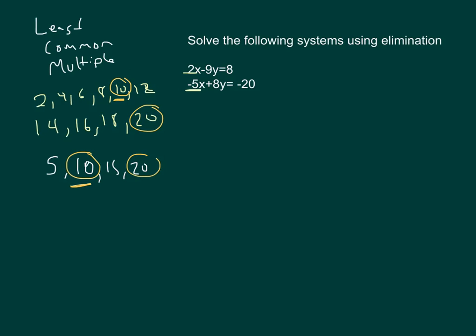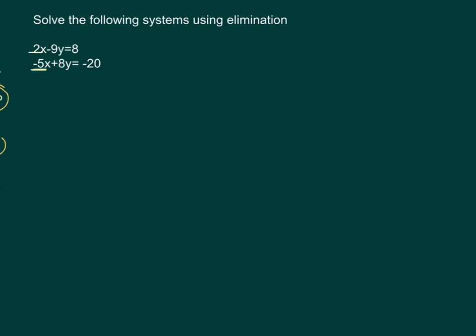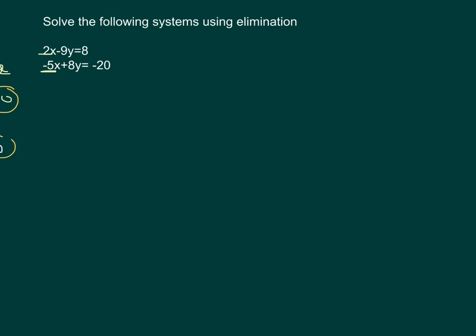I'm going to go back over and talk about my original problem because how does that factor into what we have going on over here? So let's go ahead and rewrite these. We have 2x minus 9y equals 8.